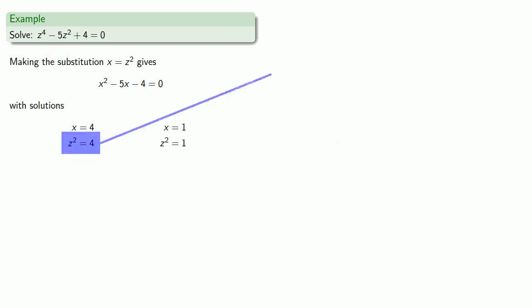Since z squared equals 4, then by the square root property, we know that z is plus or minus the square root of 4, and that means that z is plus or minus 2.